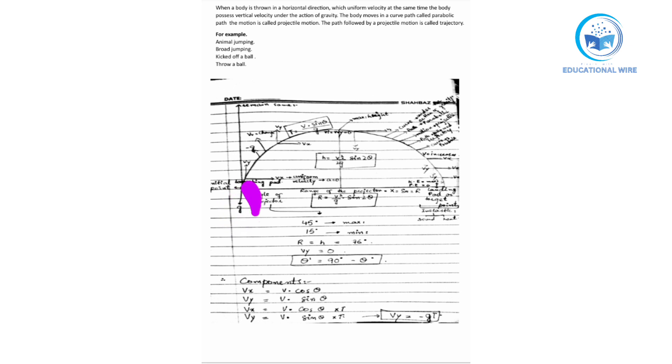The point from where the body starts is called the initial point, and this is called the launching pad. Here the angle of projection is formed. Whenever the angle is 45 degrees it will be maximum, and whenever it is 15 degrees it will be minimum. After that, the motion happens under gravity.